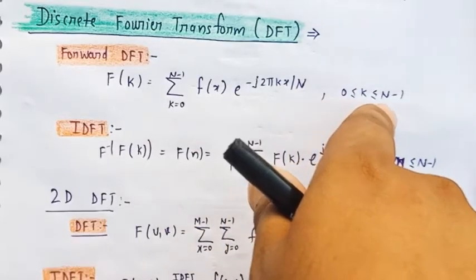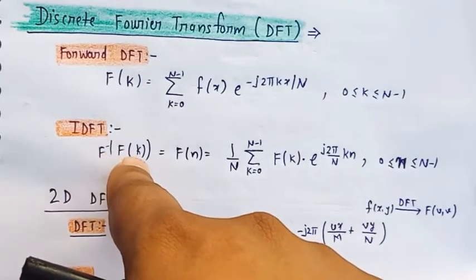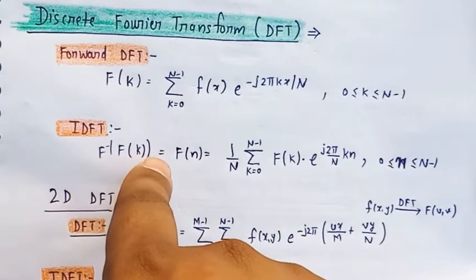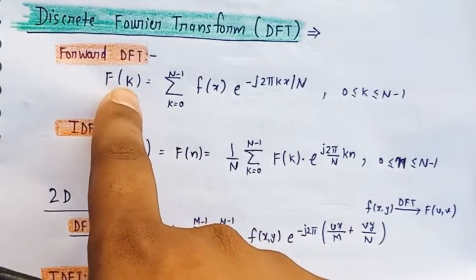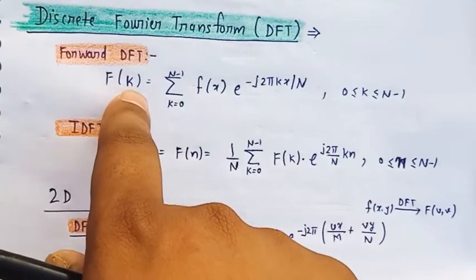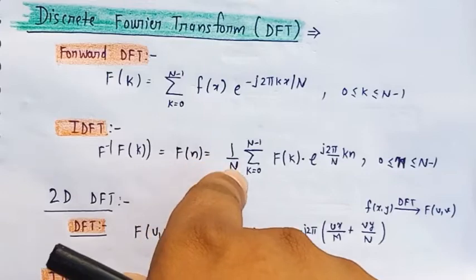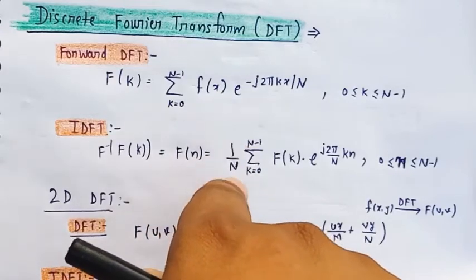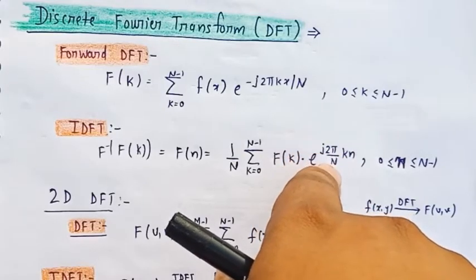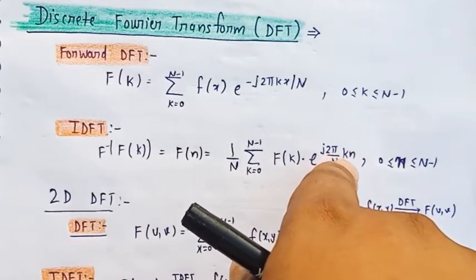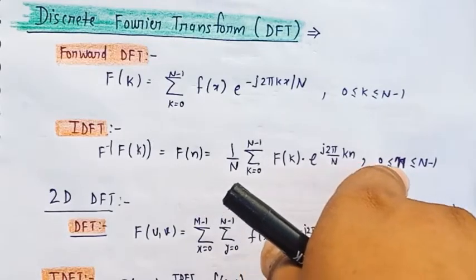In the case of inverse DFT, there is f inverse of F(k), which is equal to F(n). The formula is 1/N times sum from k=0 to N-1 of F(k) * e^(j2πkn/N), where n belongs to 0 ≤ n ≤ N-1.